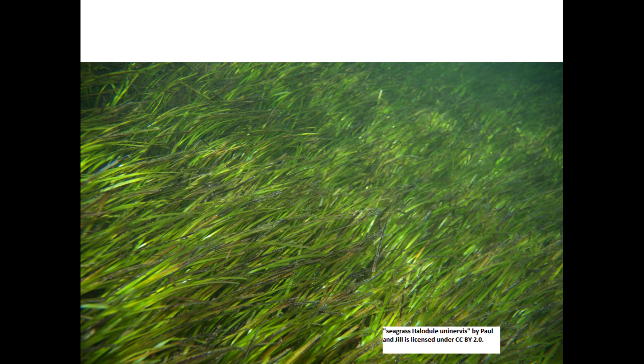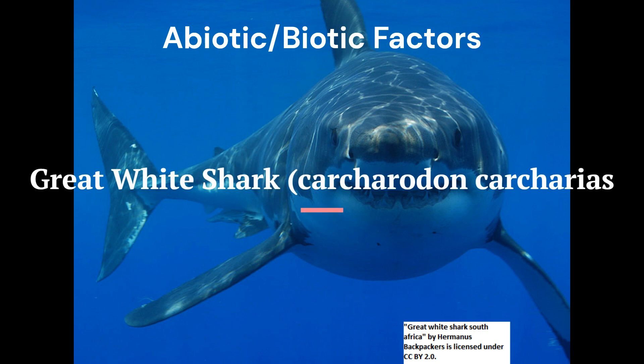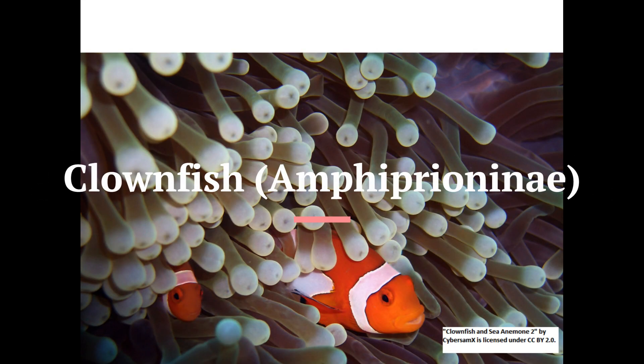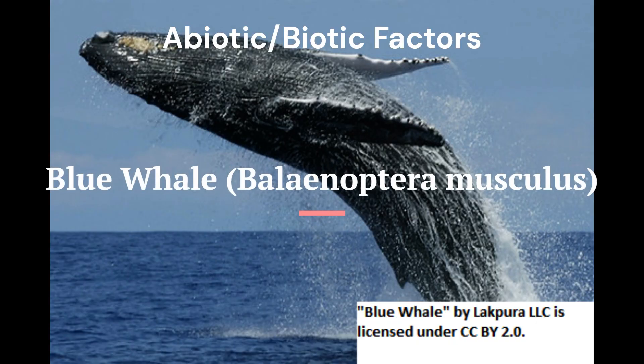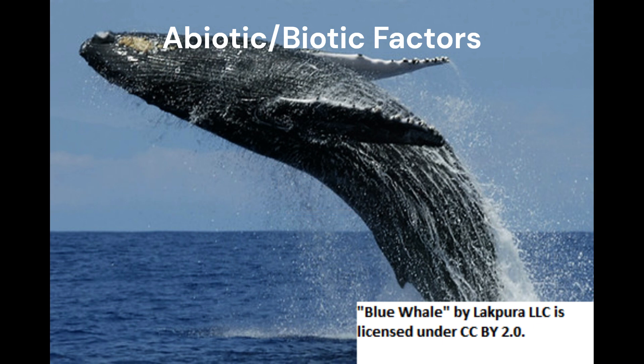Moving on to dominant animals: the great white shark, clownfish, and blue whale. The great white shark has a streamlined body, sharp teeth, and powerful jaws for hunting. The clownfish has a mutualistic relationship with sea anemones for shelter and protection. The blue whale is large in size and has baleen plates for filter feeding on krill and plankton.